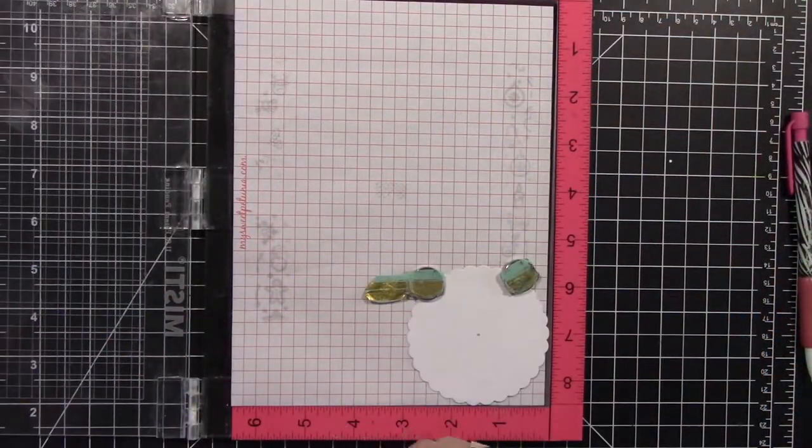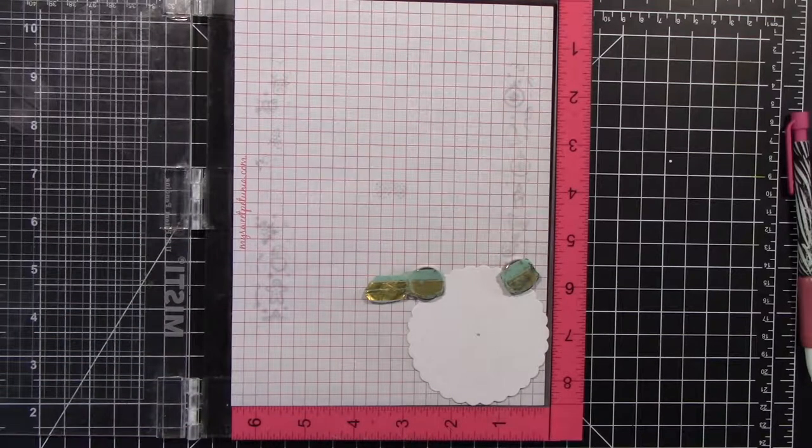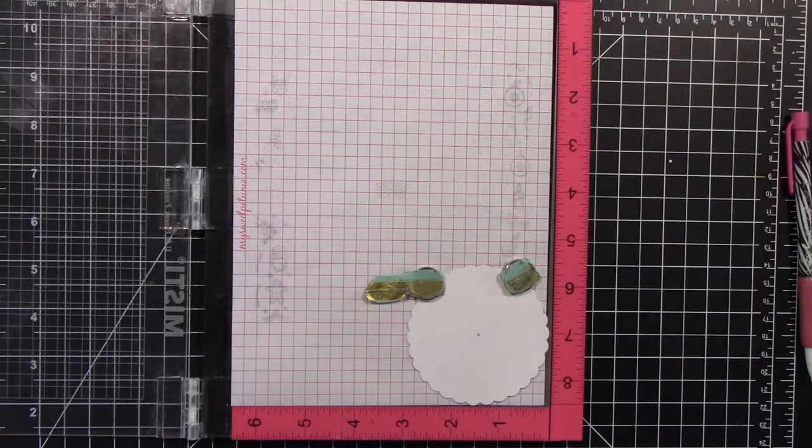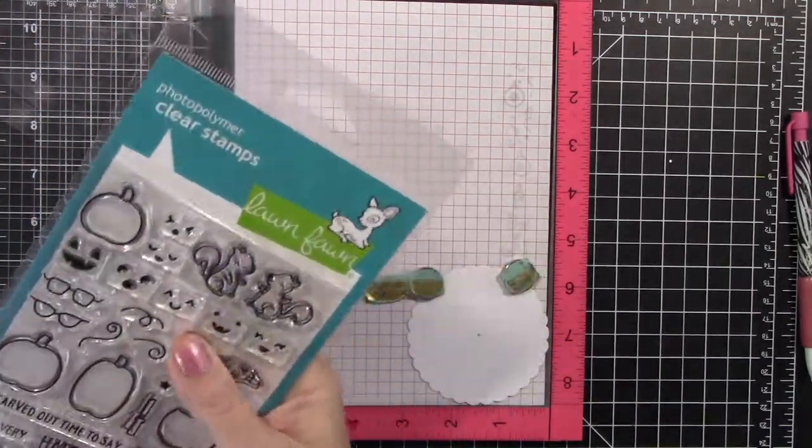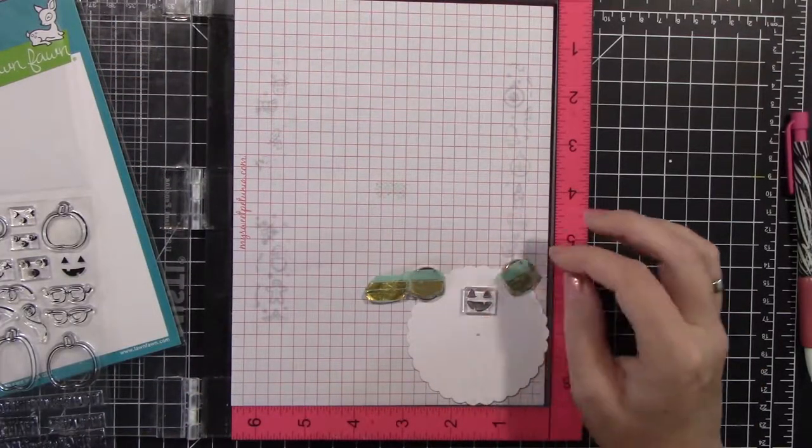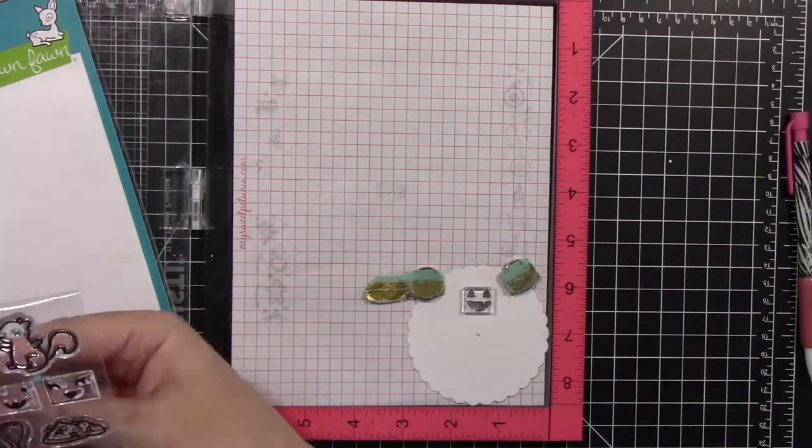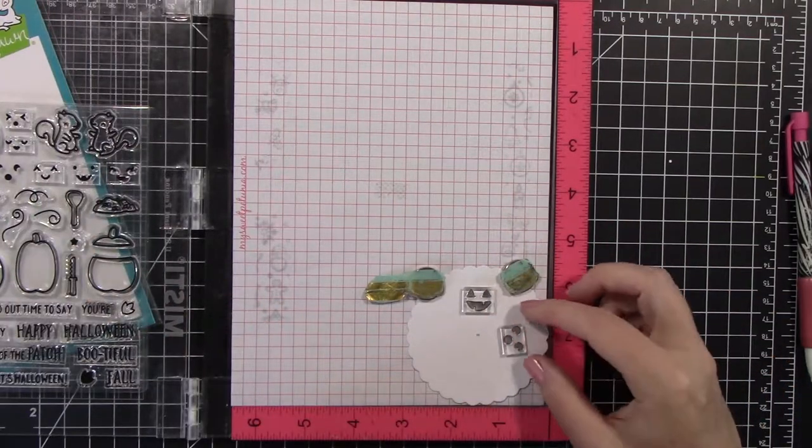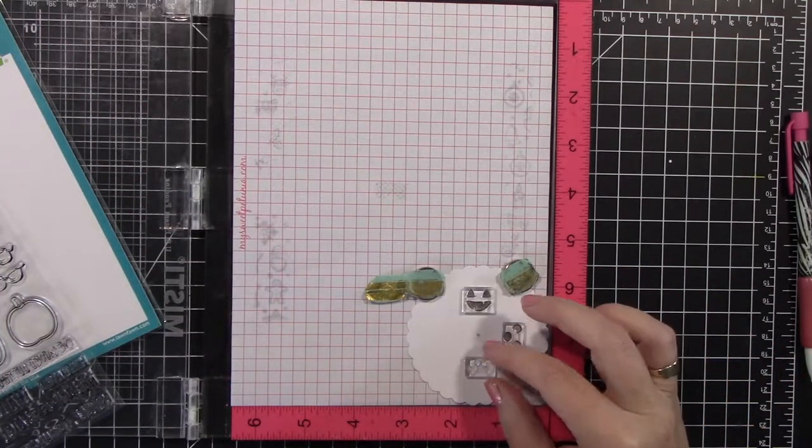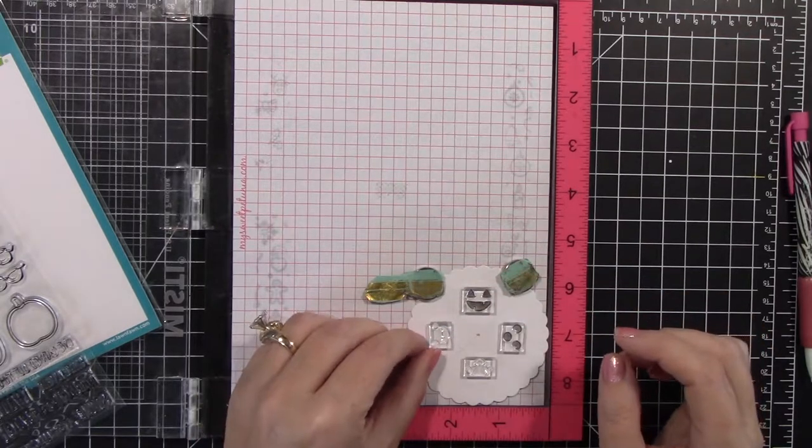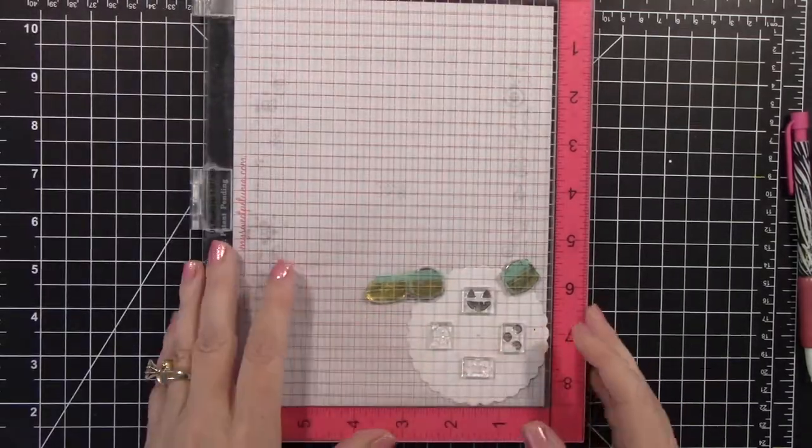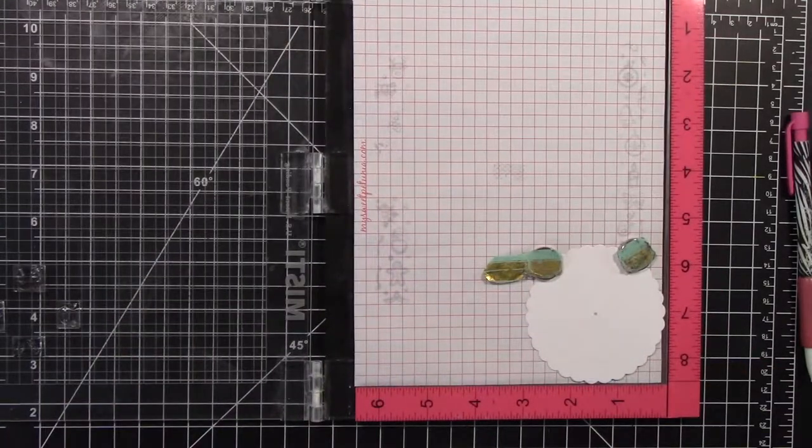So now I'm going to be using my Misti. I'm going to get all my really cute pumpkin faces from Pick of the Patch by Lawn Fawn. And I'm just going to place them inside the little circles that I drew. This stamp set is so dang cute. So you could use it for Halloween or fall, which I think is perfect. So just get them all lined up.